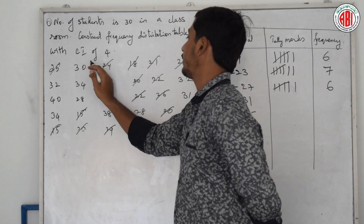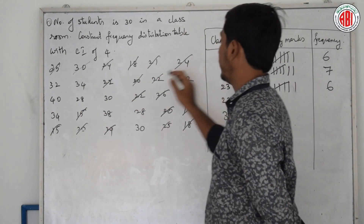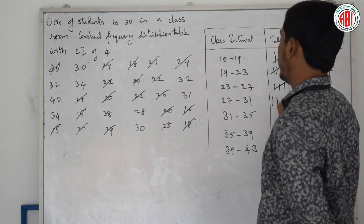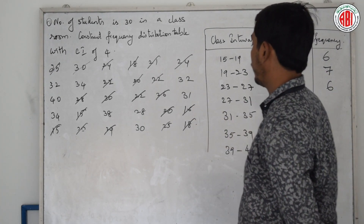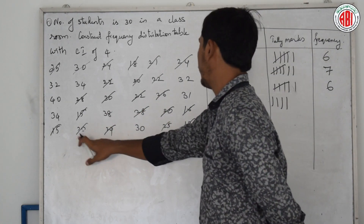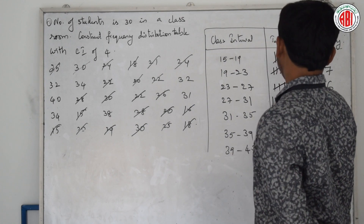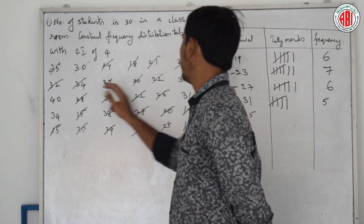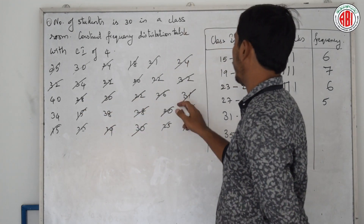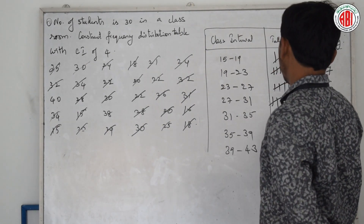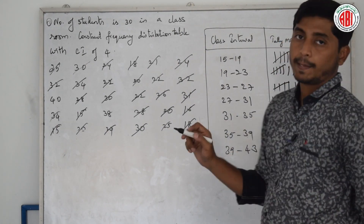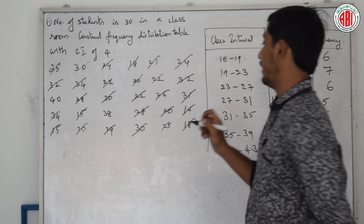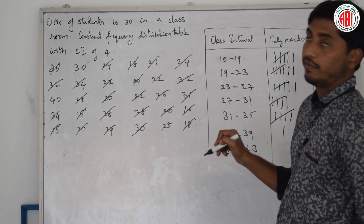For 27 to 31: counting gives us 1, 2, 3, 4, 5 — frequency is 5. Remember, 31 is not included in this interval. For 31 to 35: count gives 1, 2, 3, 4, 5 — frequency is 5. For 35 to 39, after checking the data there is only one number, so frequency is 1.